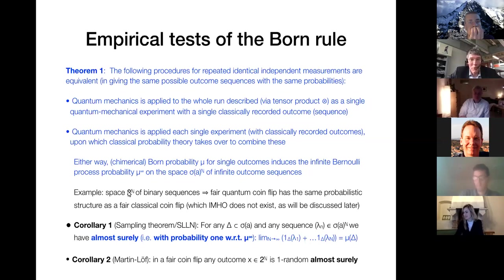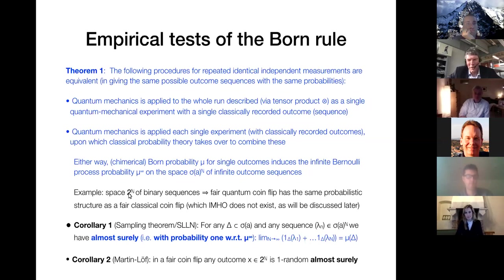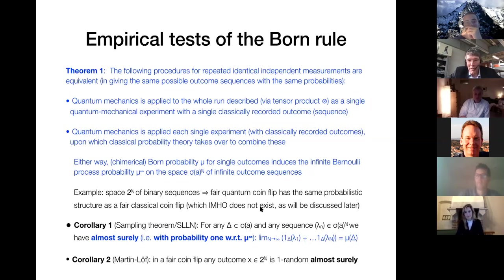The case to which we will apply this uses a space where 'two' means the bits — zero and one as possible outcomes, in the sense of von Neumann. The space of binary sequences describes an infinite repetition of a quantum coin flip. From this theorem you see that this quantum coin flip has the same probabilistic structure as a classical coin flip, as long as they're both fair — which in my humble opinion does not exist.